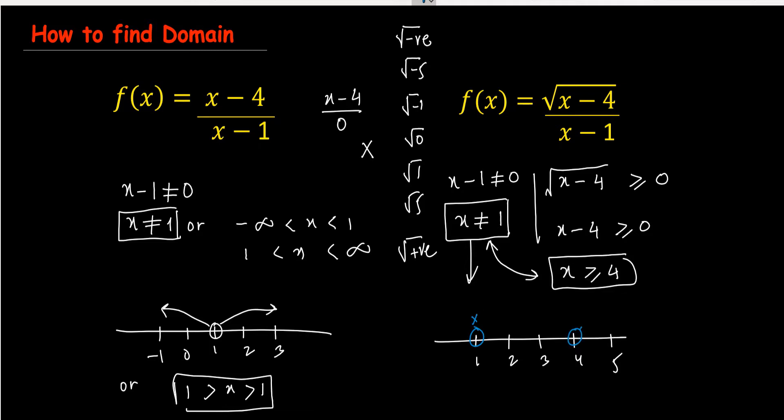But when you use x greater than or equals to 4, it means all the values in the right-hand side are your domain. So it means all the values in the left-hand side are not the domain.